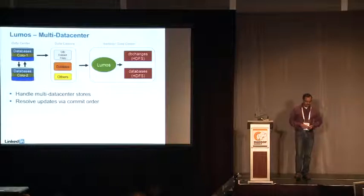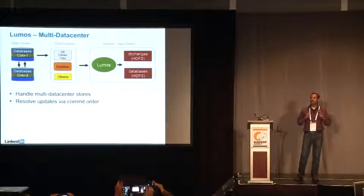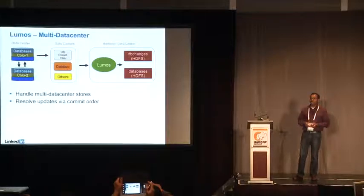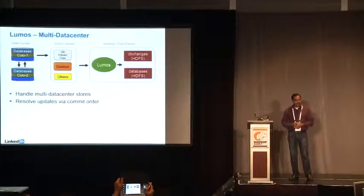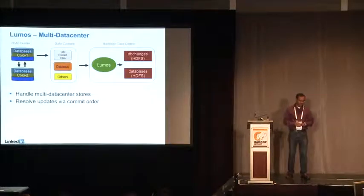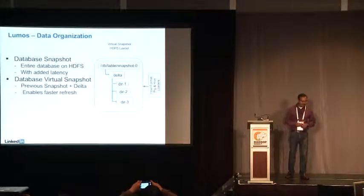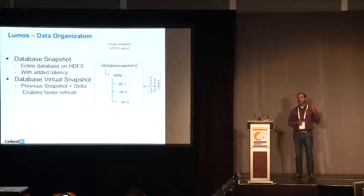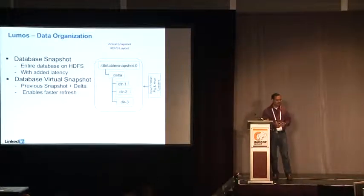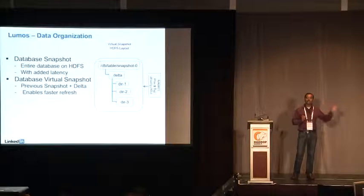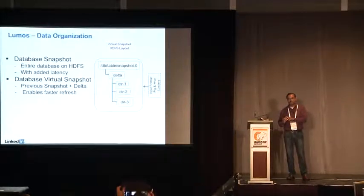This covers at a high level how the system handles data stores spread across multiple data centers. We do have Espresso, which is a homegrown data store that spreads across multiple data centers. It uses a commit order to merge them and find out what is the last update. Now let's talk about the data organization. The snapshot — when I talk about the snapshot — is not an HDFS snapshot or HBase snapshot. This snapshot is simply an HDFS folder where you have the content of the online table dumped on HDFS in a set of files.